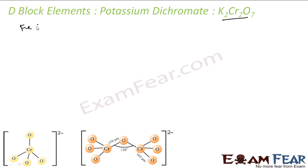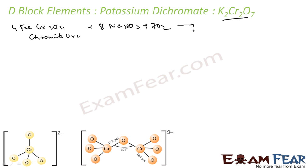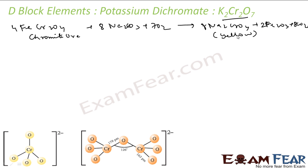We take chromite ore FeCr₂O₄ and react it with Na₂CO₃ and oxygen. The balanced equation gives Na₂CrO₄, Fe₂O₃, and carbon dioxide. Na₂CrO₄ is yellow in color. Once you get Na₂CrO₄, you filter this.